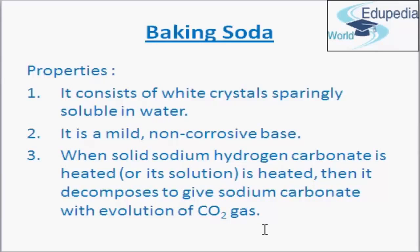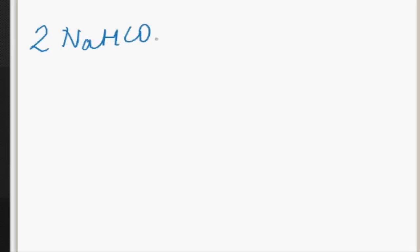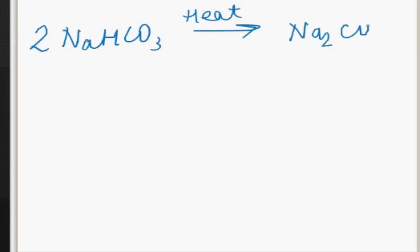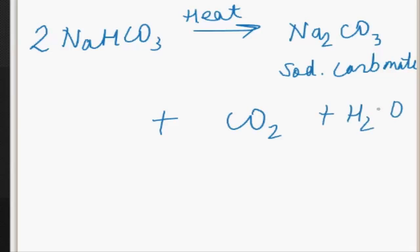Now the action of heat: when sodium hydrogen carbonate or its solution is heated, it decomposes to give sodium carbonate with the evolution of carbon dioxide gas. The chemical reaction is: 2NaHCO3 when heated gives Na2CO3 (sodium carbonate) along with CO2 and water. This reaction takes place when sodium hydrogen carbonate is heated during cooking of food. Since it gives carbon dioxide gas on heating, it is used as a constituent of baking powder.